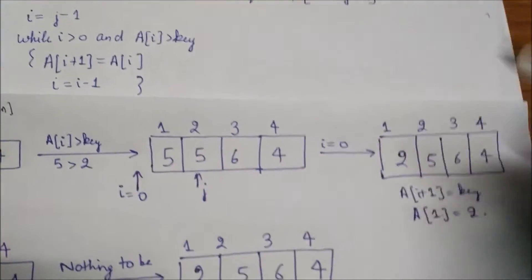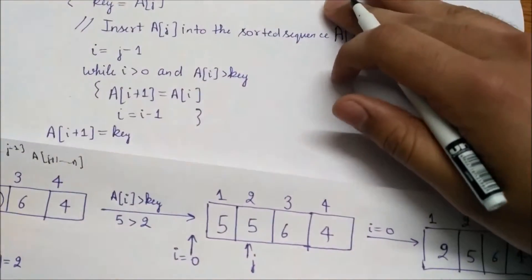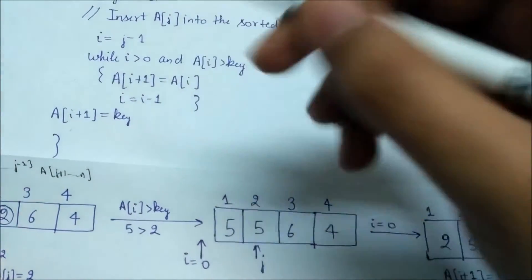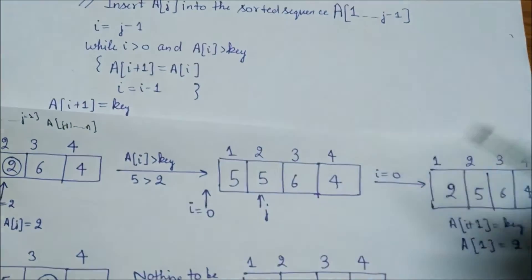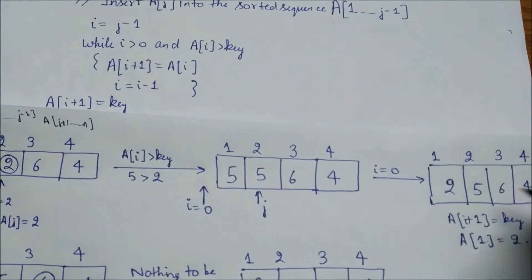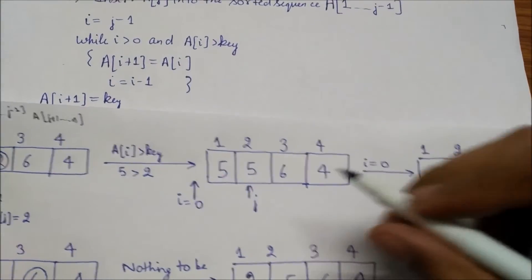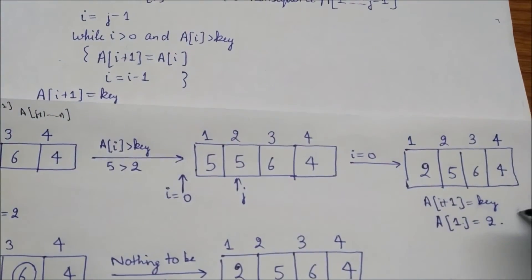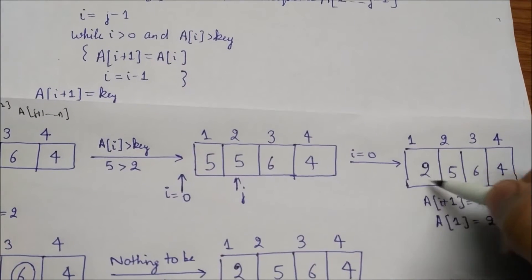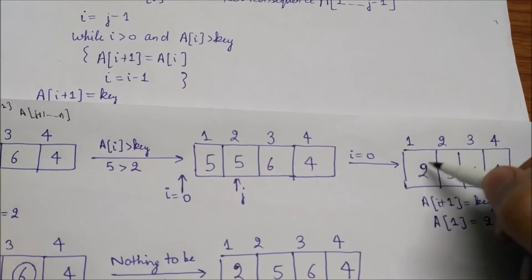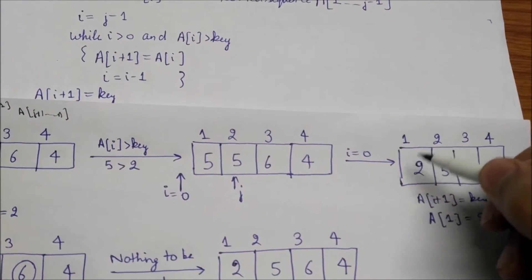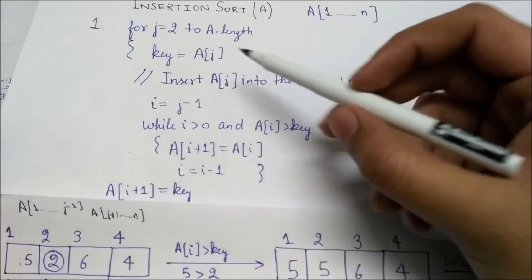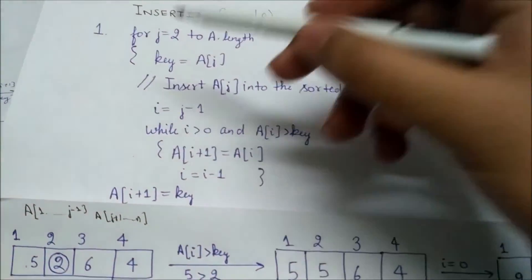Now i is decremented to zero, so the while loop breaks because the condition is no longer met. Then we set a[i+1] equal to key: since i is zero, a[1] becomes two. That completes the first iteration — the array is now 2, 5, 6, 4.